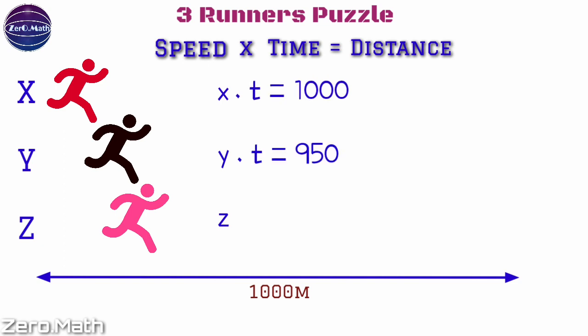Similarly, Y is running the 950 meter race, hence 950 = y × t. And Z is running the 931 meter race, hence we can write down the equation 931 = z × t.